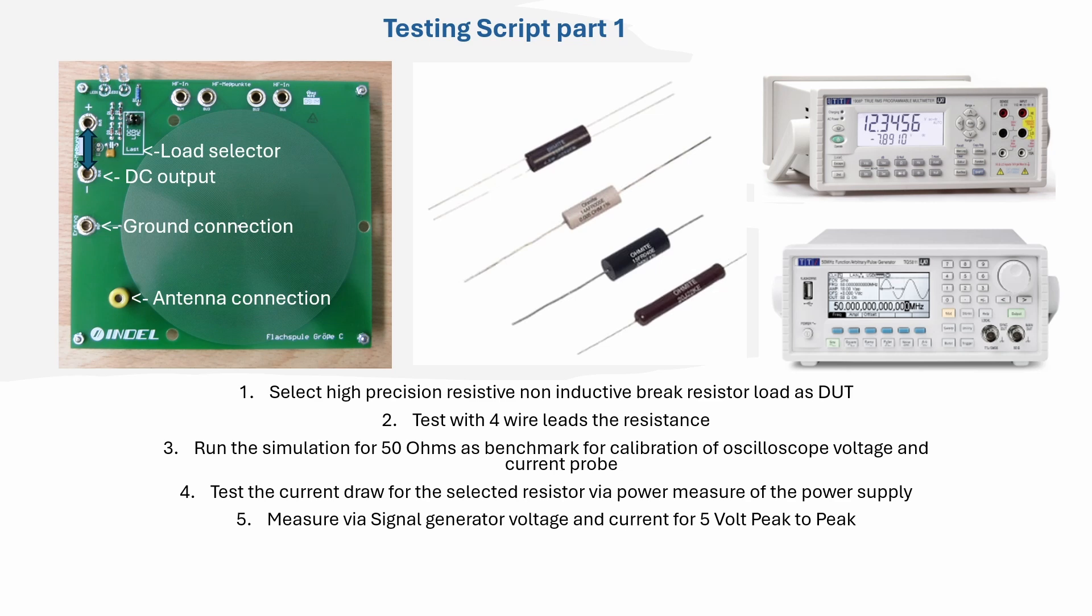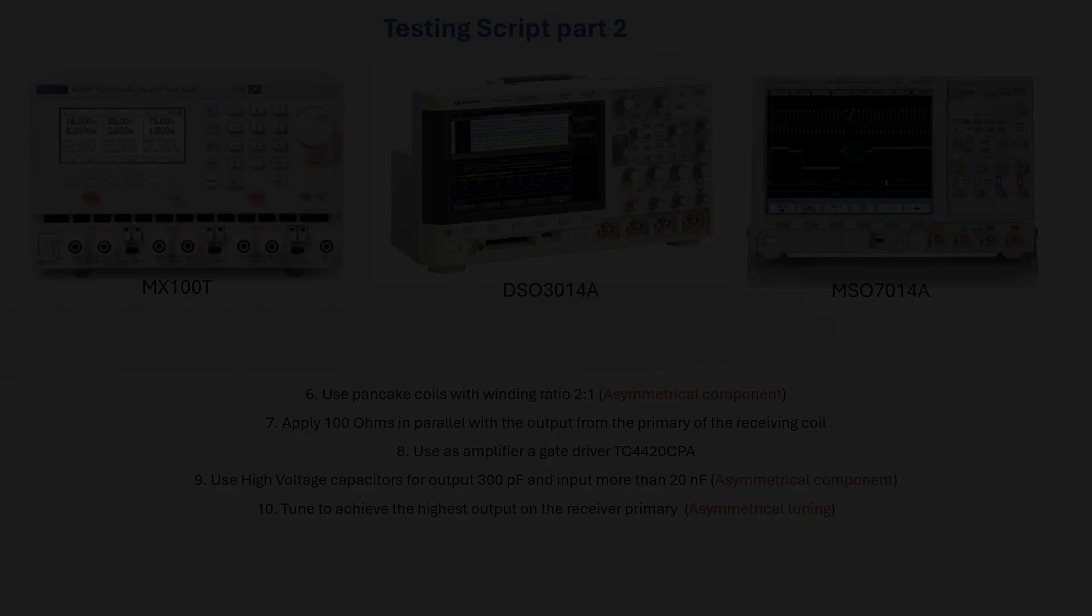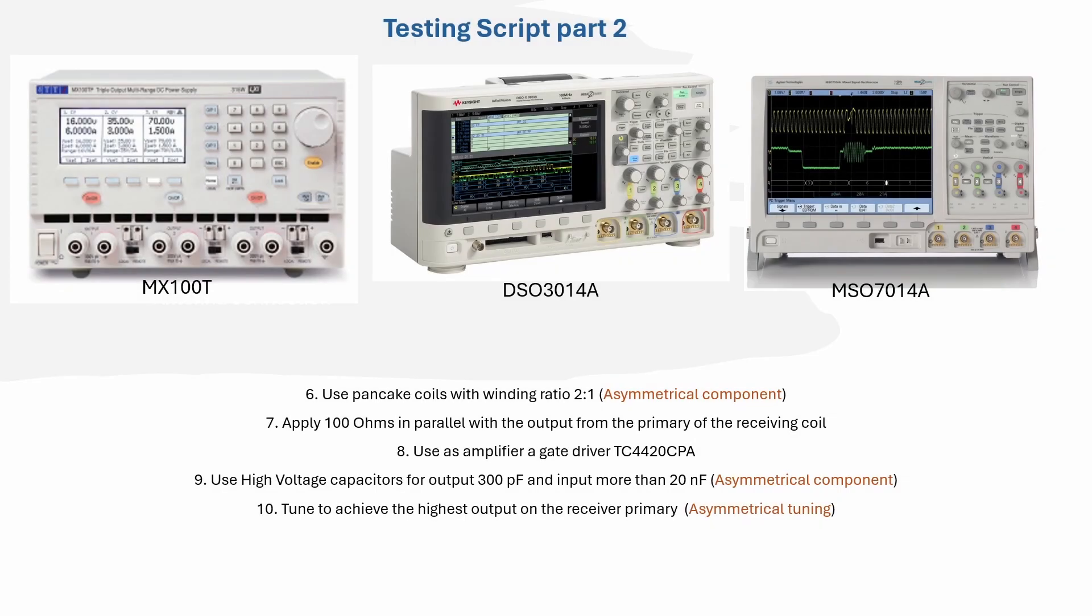The 50 ohms will be connected with a shunt to the signal generator, and that allows us for the measurement of the accurate values. We will have 5 volt peak to peak in the signal generator, and we should then see this 5 volt peak to peak, but we measure everything in RMS.